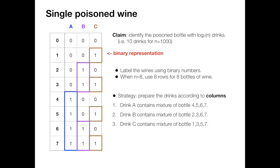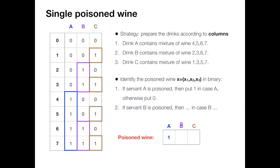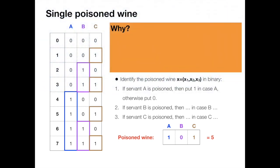The strategy is the following: we want to identify the poisoned wine using binary representation. So assume servant A is poisoned, then we put a one in the first digit, otherwise we put a zero. And we do the same thing for servant B and servant C. Let's assume that we get 101 in terms of representation, which means servant A is poisoned, servant B is not poisoned, and servant C is poisoned. So my claim is that the poisoned bottle must be bottle number five.